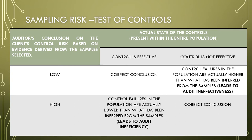Look at this table. We have two columns here. One is the auditor's conclusion based on the evidence derived from the sample selected. The second column is the actual state of the controls present within the entire population. We cannot know for certain, but there are two types of state. We have concluded that the control risk for our client is actually low.